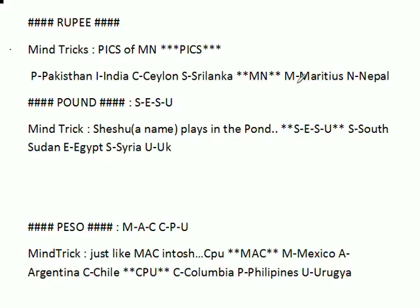Continuing the rupee mnemonic: M for Mauritius, A for Afghanistan, N for Nepal — so PICS OF MAN gives you six countries. Next one is pound. Remember 'SISU': S for South Sudan, I for Egypt, S for Syria, U for UK (United Kingdom).